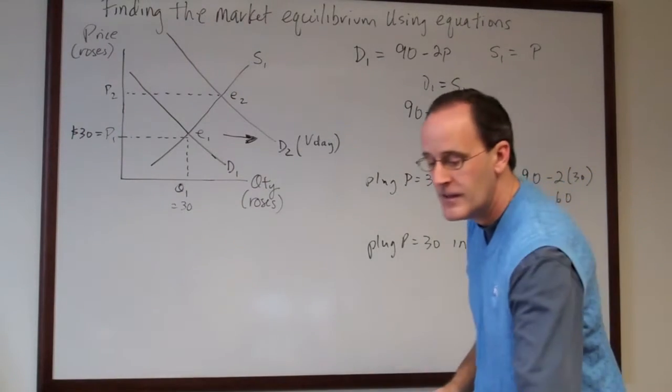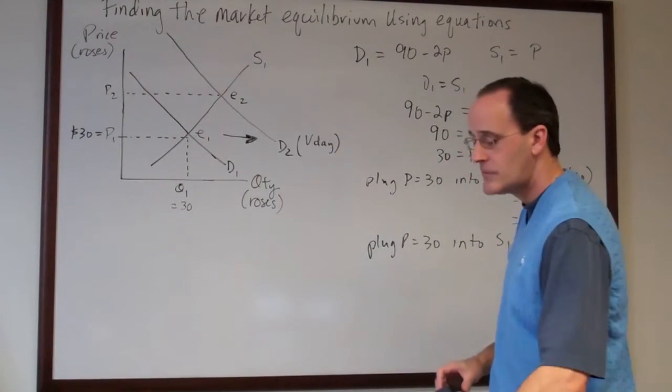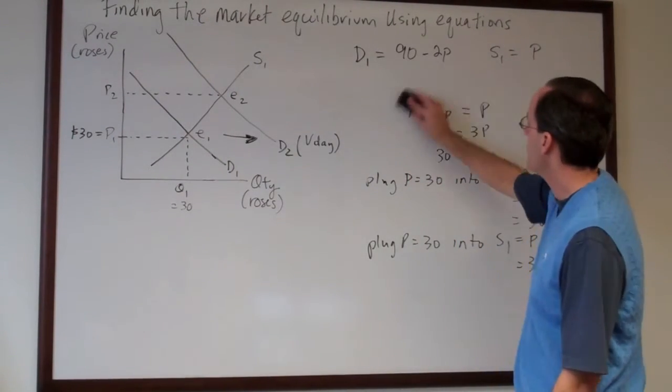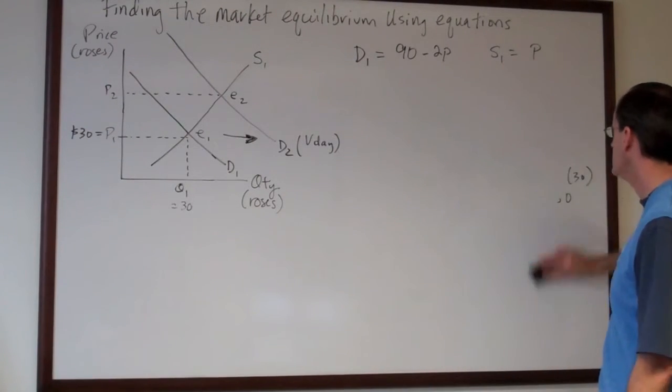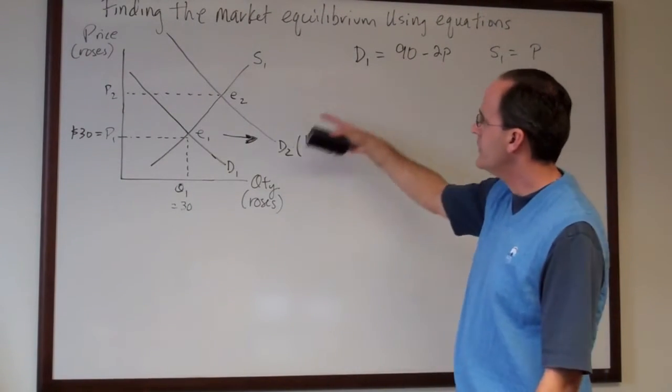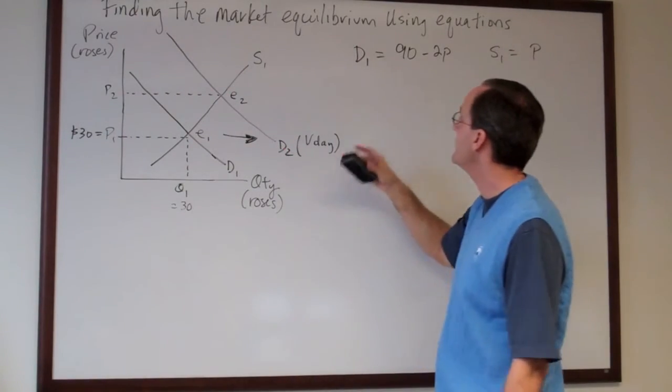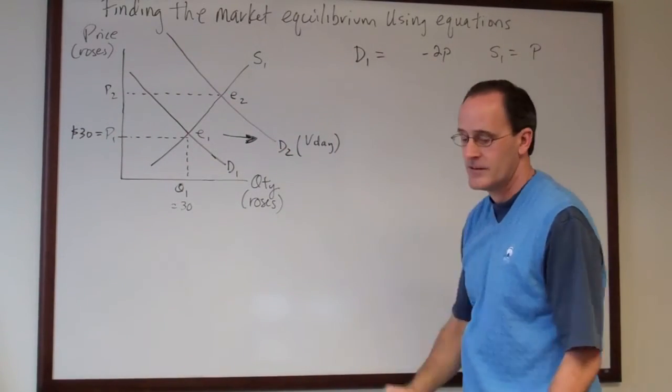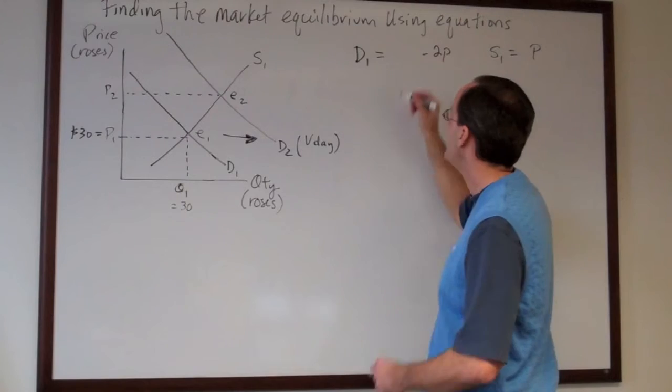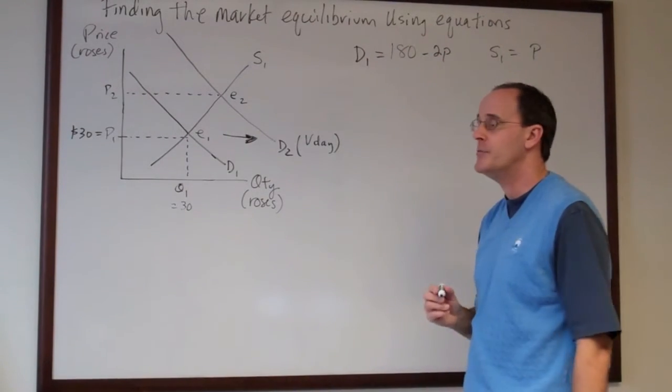So to solve for this let's then change a little bit of the math that we've done. I'll go ahead and erase this right here. And let's come up with the new equation for demand. In this case I'm going to write the new equation as 180 minus 2p.